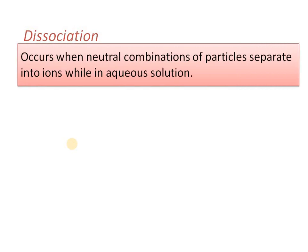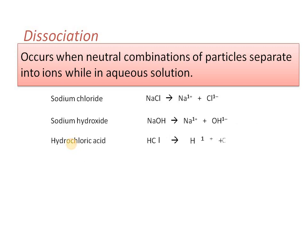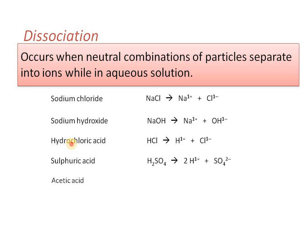Dissociation occurs when a substance is dissolved in a solvent and ion formation takes place. NaCl gives 2 ions, sodium hydroxide gives 2 ions, hydrochloric acid gives 2 ions, sulfuric acid H₂SO₄ gives 3 ions, and acetic acid gives 2 ions. However, acetic acid can also undergo hydrogen bonding leading to association — two molecules join to form one molecule, which is dimer formation.